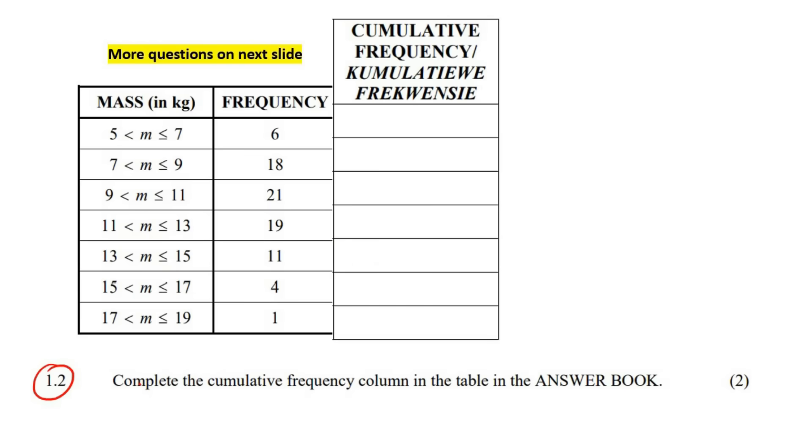This question says, complete the cumulative frequency in the answer book. So I went to the answer book and got the cumulative frequency table. Cumulative frequency is easy. So you start with the first one, so that's 6. Then you think about, if there's 6 people here and 18 people over here, then how many people would you count all together up to this point? Well, that would be 24, because 6 plus 18.